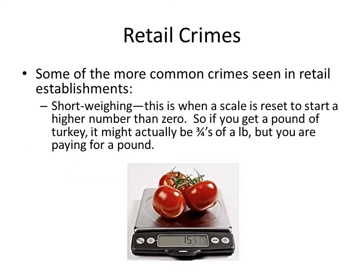Retail crime. Some of the more common crimes seen in retail establishments include short weighing. This is when the scale is reset to start at a higher number than zero. So if you get a pound of turkey, it might actually be three quarters of a pound, but you're paying for a pound. It doesn't seem like a lot of money, but if they do it every single time they sell a pound of turkey, they are adding up all those quarter pounds — about $1.25 to $2 for each pound.